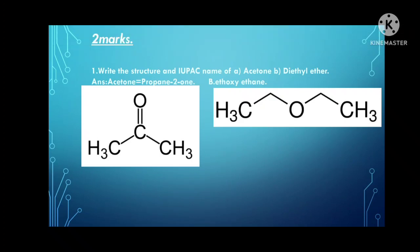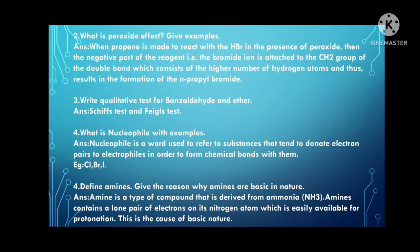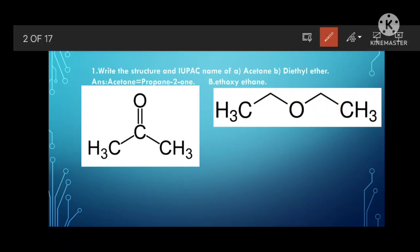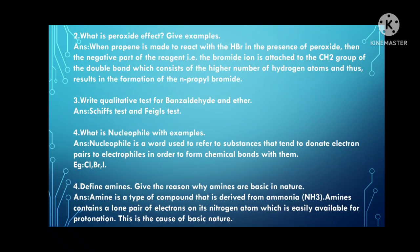The first two mark question: write the structure and IUPAC name of acetone and diethyl ether. Acetone's IUPAC name is propan-2-one — practice this structure. The second one is diethyl ether, whose IUPAC name is ethoxyethane: ethane, two carbons, ethoxy with oxygen, ethane. Remember this and practice — you will succeed.